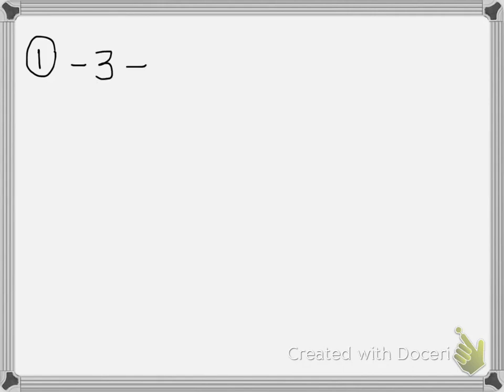So if I said negative three plus an eight — those are opposite signs, so we're going to subtract. Eight minus three gives me a five, and I'm going to take the sign of the larger number, which is a positive.